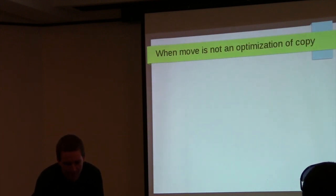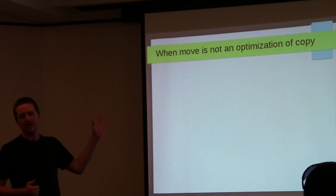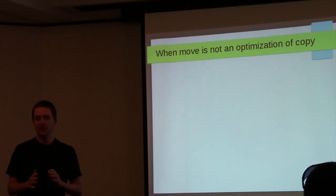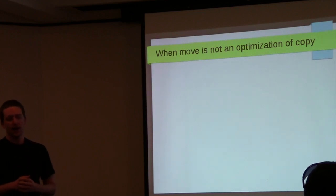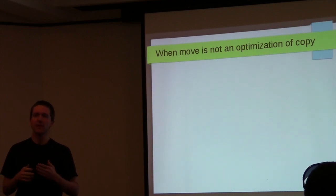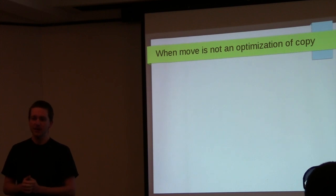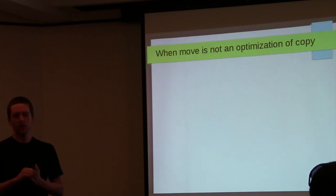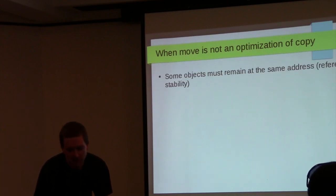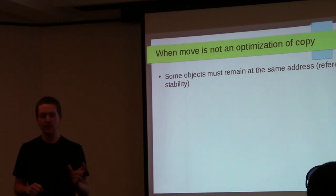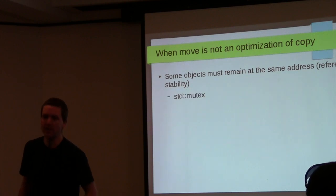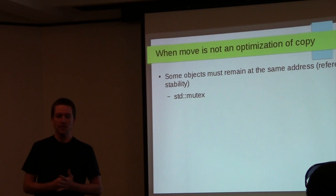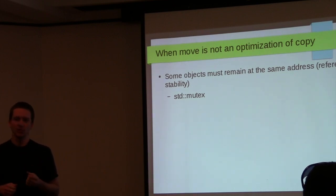Scott Meyers wrote about thinking of move as an optimization of copy, and in most cases that is true. But sometimes you can use dynamic allocation to achieve moves that are not just optimizations of copy. Some objects have to remain at the same address — also referred to as reference stability. An example is std::mutex: it's not movable, but you can have a unique_ptr to a mutex and move that handle around while the mutex still operates.